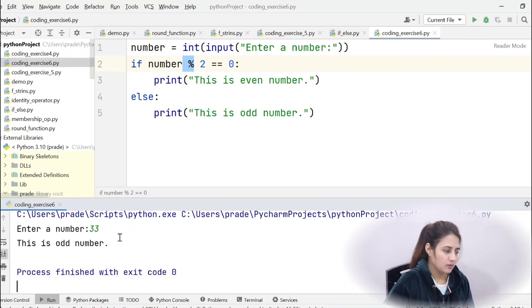33. This is odd number because there would be remainder, remainder is 1, so this is odd number.